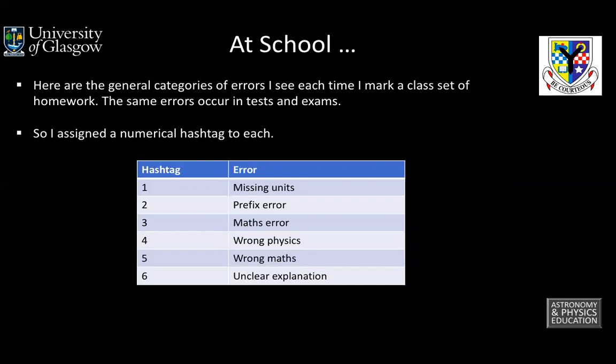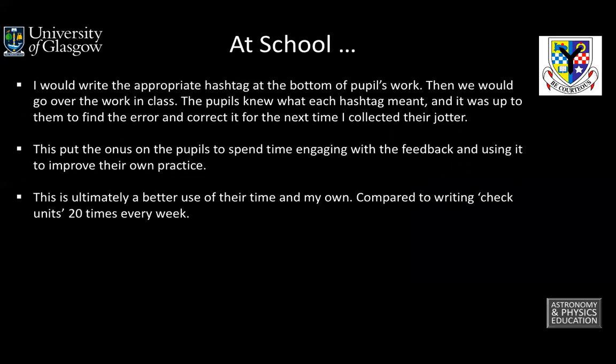So what I did was I assigned a numerical hashtag to each of these errors. There was also a last one where I could write a comment if they'd done something separate or more specific to the topic we were doing at the time — for example, uncertainties or dynamics questions. When marking, I would write the appropriate hashtag at the bottom of the pupil's work. Then we'd go over the work in class as a whole class. The pupils knew what each hashtag meant and it was up to them to find the error in their own work. I wasn't pointing it out directly to them, and they had to correct it for the next time I looked at their jotters. This put the onus on the pupils to spend time engaging with feedback and actually using it in their own practice.